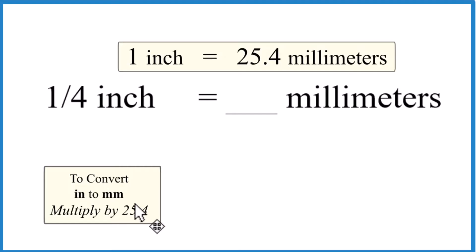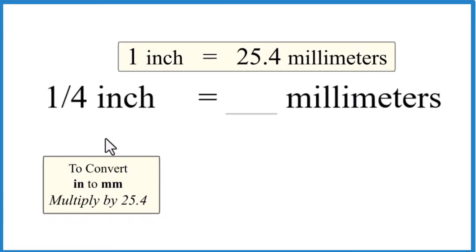So it might be easier for us to take and change this to a decimal to do that. So you could divide one by four, or you could just know that one-fourth is equal to 0.25, and those are inches.